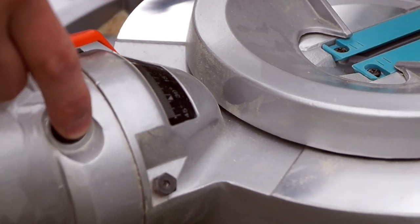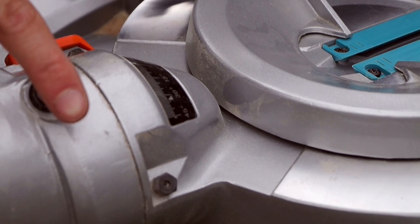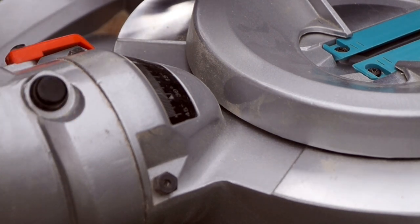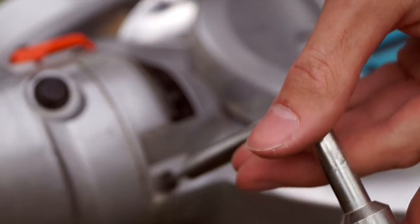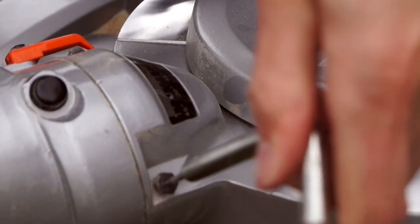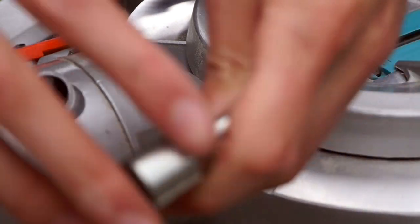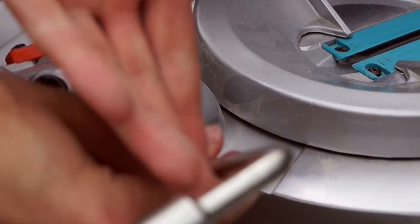For the right 45 degree bevel, it's principally the same. But you need to press the release button to flip it over. It works better to press the button while the blade is tilted to the left. The right 45 degree bevel adjustment bolt is on the left side of the bevel scale.